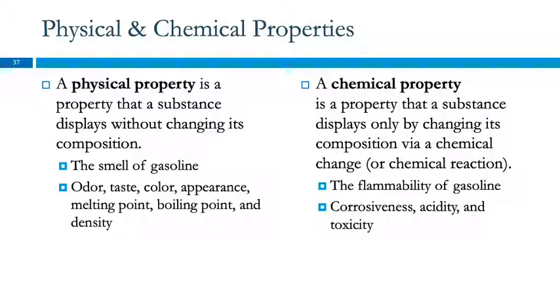A chemical property is one that a substance displays only by changing its composition. In order to demonstrate a chemical property, the substance undergoes a chemical change. So a chemical property of gasoline is that it is flammable. If you demonstrate that or observe gasoline burning, in that process the gasoline is destroyed and new things are made. The composition changes. So it's a chemical change.